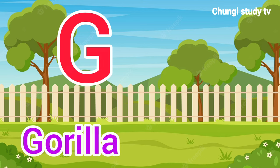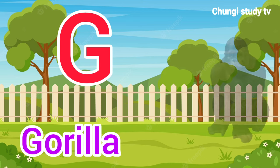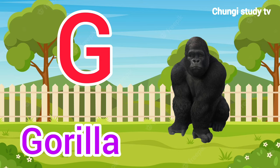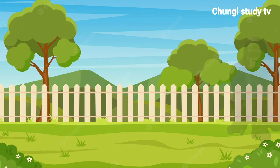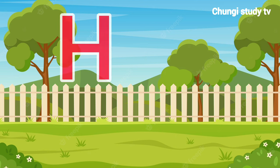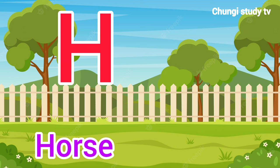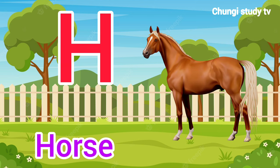G, G for Gorilla. Gorilla means Gorilla. H, H for Horse. Horse means Ghoda.